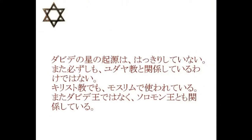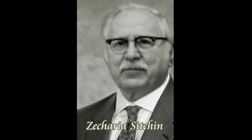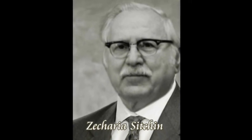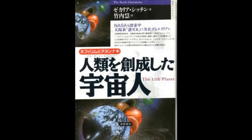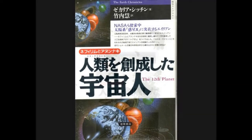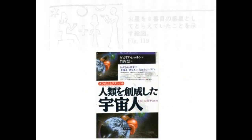ソロモン王とも関係しているということです。ゼカリア・シッチンの描いた本の中に、こんな写絵がありました。意義、つまり火星人を表した絵なんですけども、